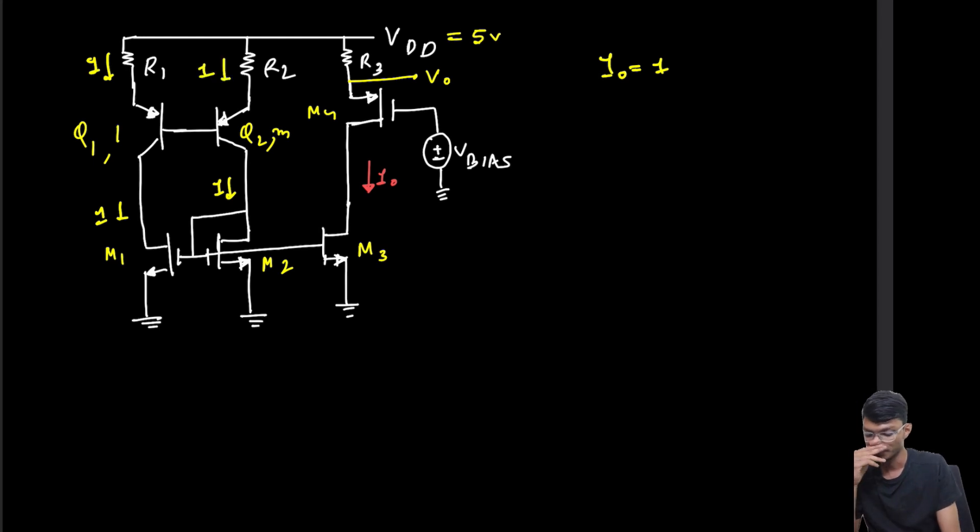Now what we can do is we can write a KVL across this loop. The voltage across this emitter-base section of this BJT1 is VEB1, and the voltage across the emitter-base section of this second BJT is VEB2.